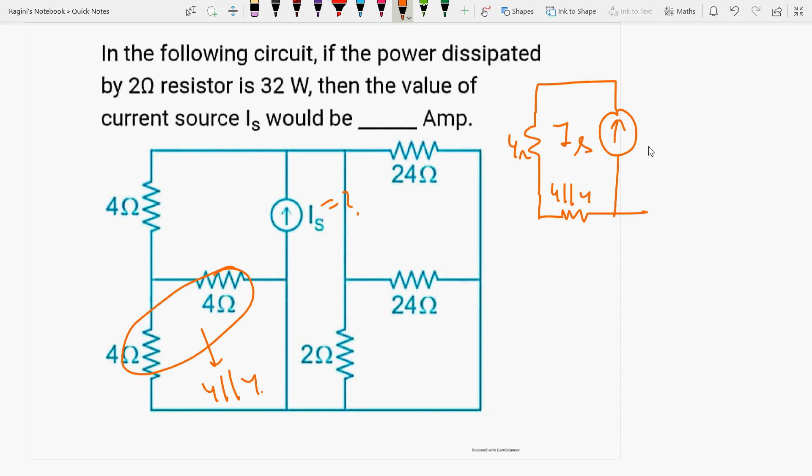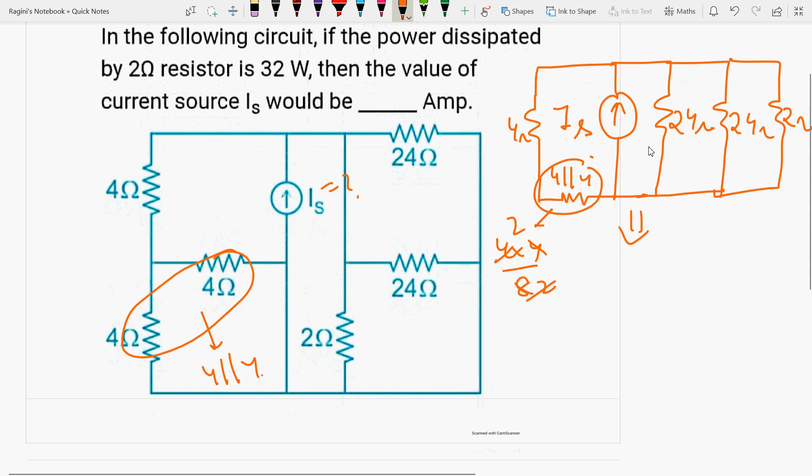2 ohms here, and 24 ohms here, parallel to 4, parallel to 4 here. This is 4 by 8, so this value is 6.